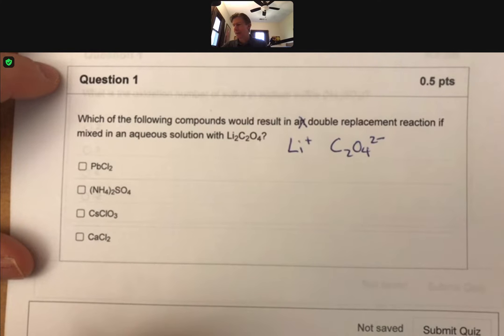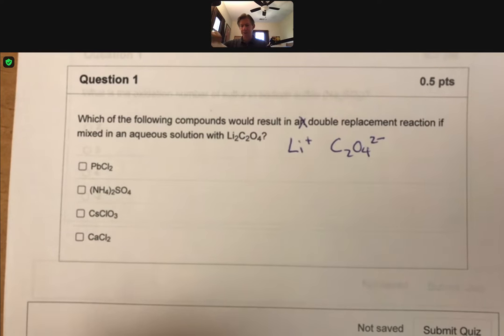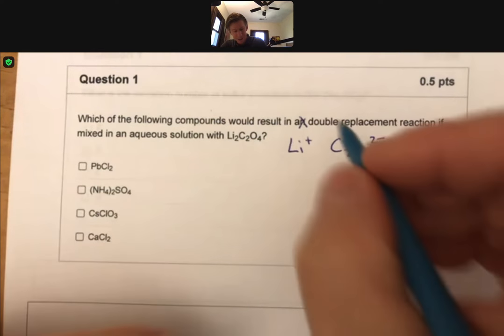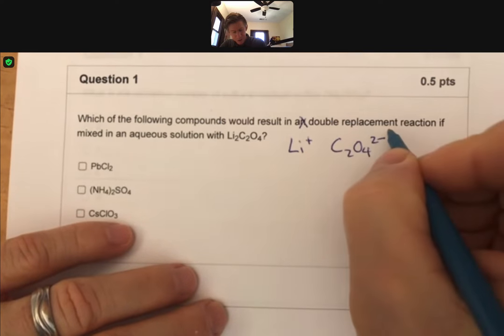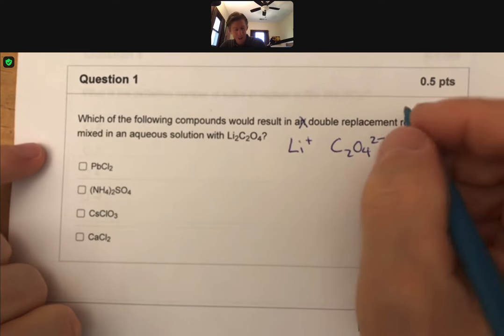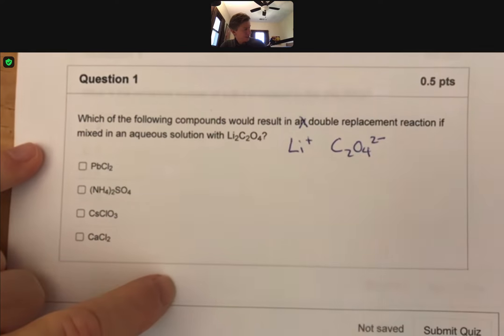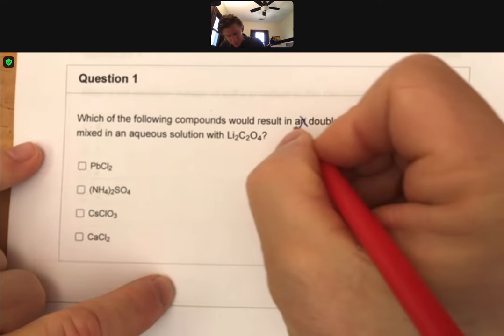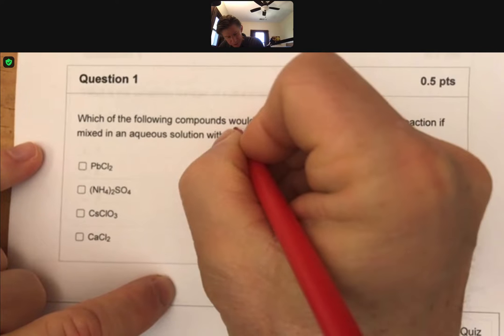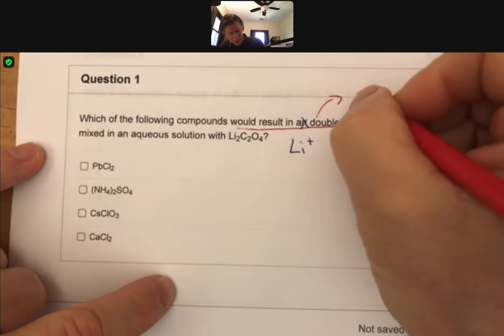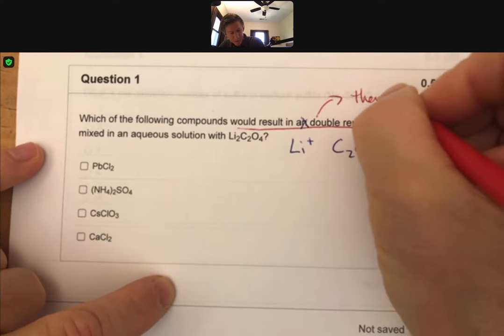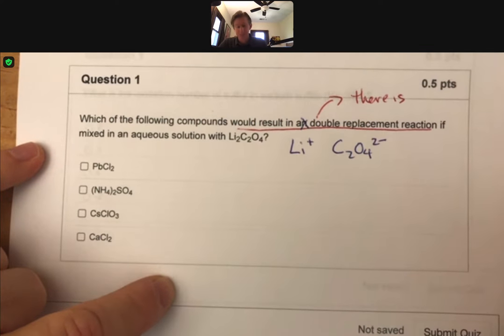When we look at our solubility list, what "will result in a double replacement reaction" means is we need there to be a solid. Would result in a double replacement reaction means there is a precipitate, a solid.